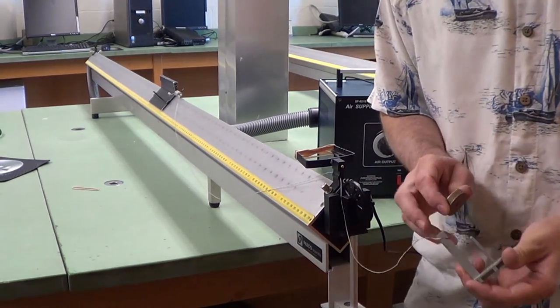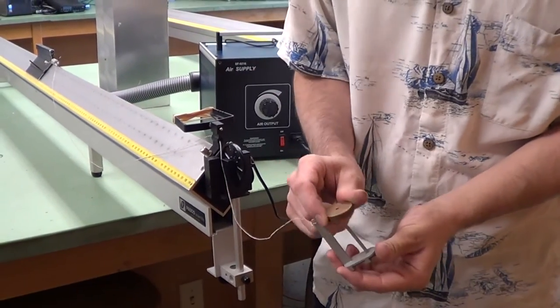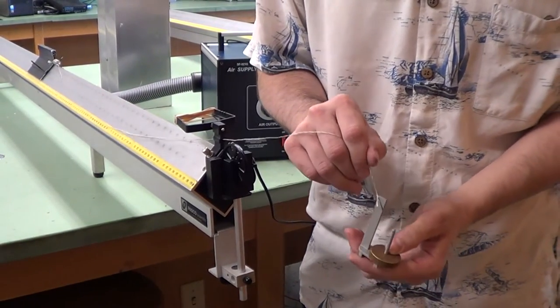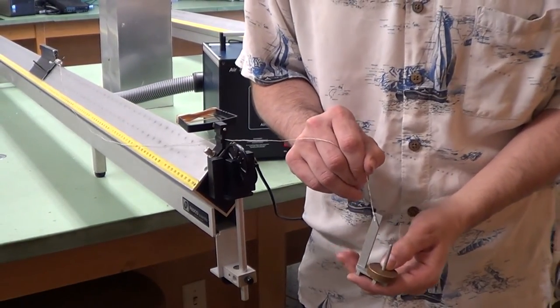In doing so, we take the 5-gram weight hanger, place a weight on it. In this case, it's 50 grams. So, for our hanging weight, we need to record 55 grams, not 50.